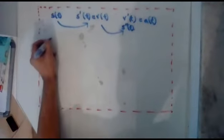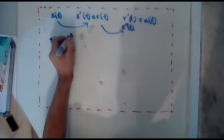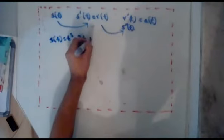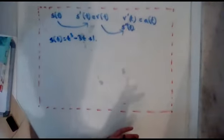So a particle moves in a straight line with position relative to o, the origin, given by s of t, so displacement, equals t cubed minus 3t plus 1. So first part of the question. Find expressions for velocity and acceleration, draw sign diagram for each.